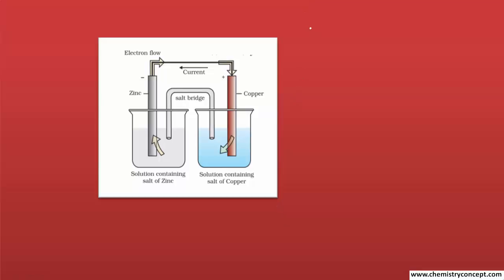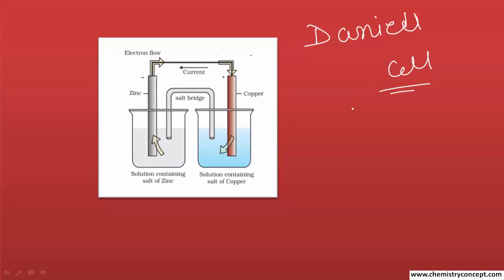Now let's understand the galvanic cell with an example — the very famous Daniel cell. The Daniel cell is a galvanic cell named after the scientist Daniel. It converts chemical energy into electrical energy through the redox reaction: Zn + Cu²⁺ → Zn²⁺ + Cu. This redox reaction involves electron transfer, and those electrons are used to produce electrical energy.